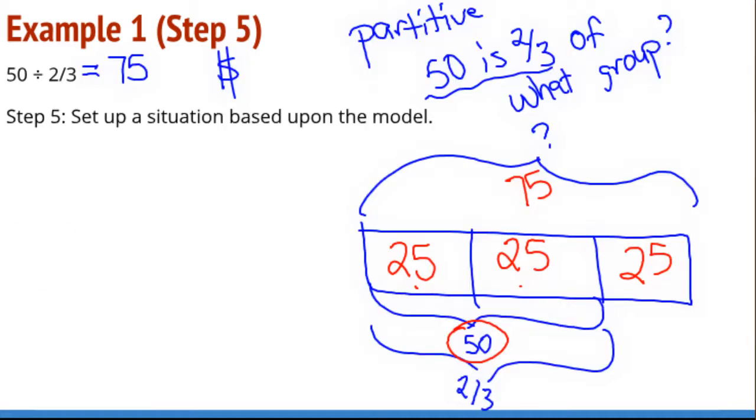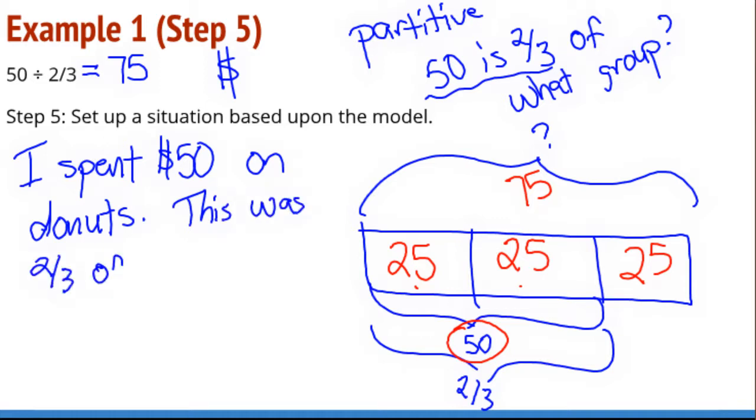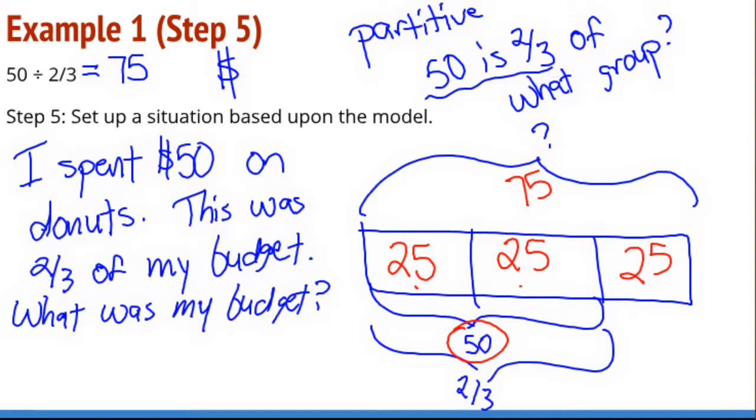Thinking of a situation based upon the model, let's see. So let's say that I went shopping. I spent $50 on donuts, because everything in life is about donuts. And this was two-thirds of my budget. And so then, what was my budget? So I know that $50 is two-thirds of my budget, and I'm trying to figure out what my whole budget was. And we, of course, have already done all the work over here and found that my whole budget was $75.